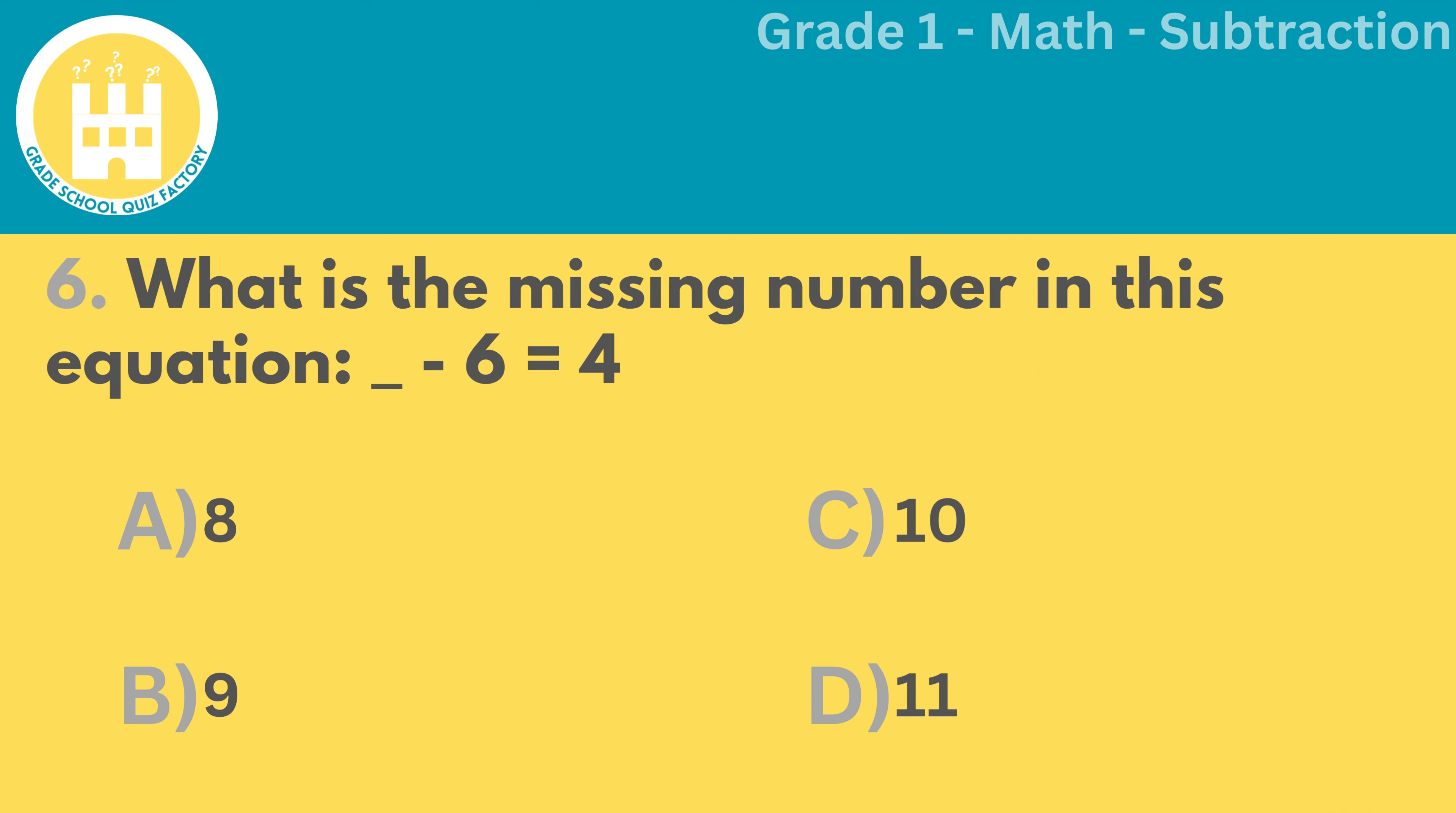Number 6. What is the missing number in this equation? Blank minus 6 equals 4.